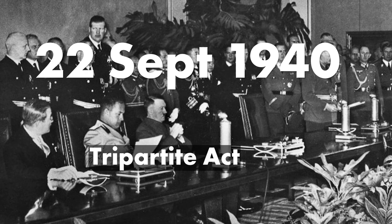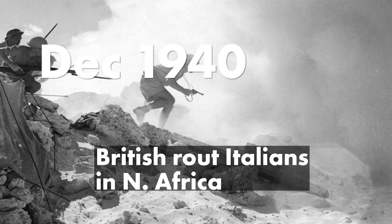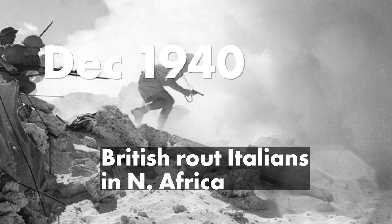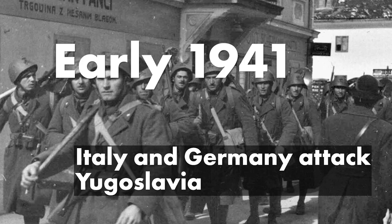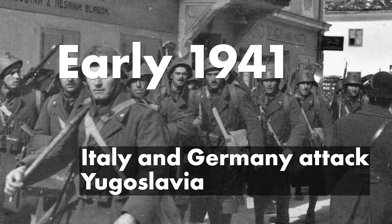On the 22nd of September 1940, we have the Tripartite Pact — a pact of mutual alliance signed by Germany, Italy, and Japan. In December 1940, British forces routed the Italians in North Africa, led by General Wavell. In early 1941, Italy and Germany attack Yugoslavia — German and Italian troops attacked Yugoslavia, Greece, and the island of Crete. German Field Marshal Erwin Rommel led the Axis powers back to North Africa.